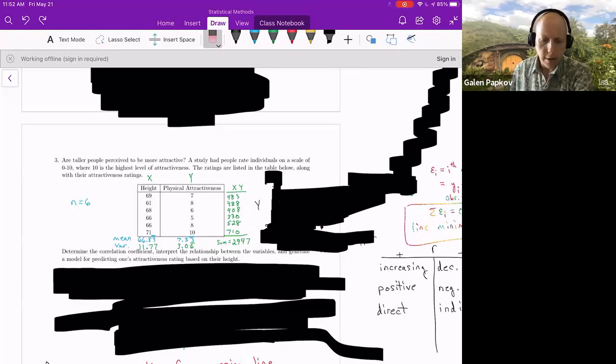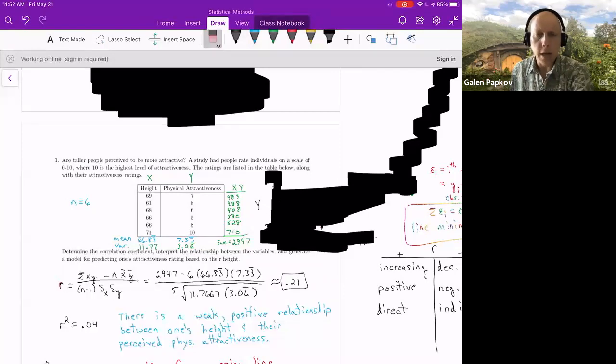When you put all these together and you have N equals six observations, you should get an R value of about 0.21. Now, if you're pretty far off from this, or if you're a little off, it's probably due to rounding. Even though I write values like 7.33 and 66.83, when I actually calculate, I do put a whole bunch more threes in there. So the 66.8333333 and 7.333333. So I am a bit more precise than how I'm writing it here.